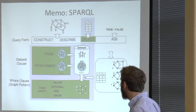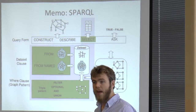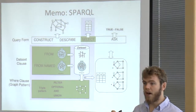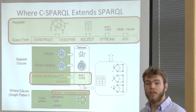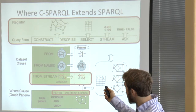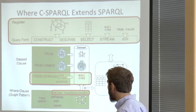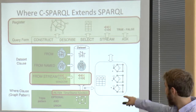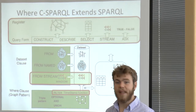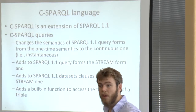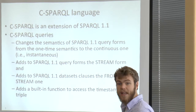Let's start with a memo about SPARQL. It's the SPARQL protocol and query language — an RDF query language. It allows you to go through RDF graphs and has the expressiveness of a powerful query language. C-SPARQL is built on top; it extends the SPARQL semantics and query form by adding the REGISTER clause, which allows you to report a stream. It extends the data clause for targeting streams, and extends the WHERE clause by adding a filter function which operates over timestamps. C-SPARQL is SPARQL 1.1 compliant, except for updates.